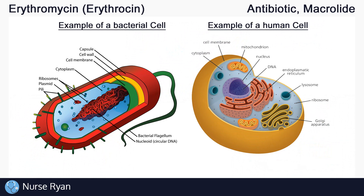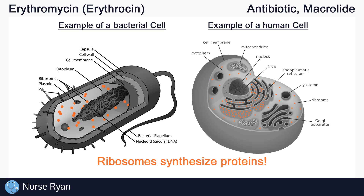To understand how macrolides work, we first have to understand a bit about the anatomy of cells. On the left is an example of a bacterial cell, and on the right an example of a human cell. You can see all their different little organelles, which each carry out specific functions that keep the cell alive. Inside both bacterial and human cells, ribosomes are present to synthesize proteins. Proteins are required in the normal function of cells, such as repairing damage to the cell or aiding in chemical processes.